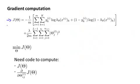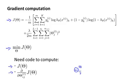Here's the cost function that we wrote down in the previous video. What we'd like to do is try to find parameters theta to try to minimize J of theta. In order to use either gradient descent or one of the advanced optimization algorithms, what we need to do is write code that takes as input the parameters theta and computes J of theta and these partial derivative terms. Remember that the parameters of the neural network are theta superscript l, subscript ij.